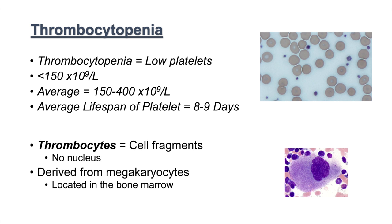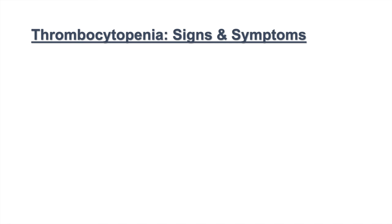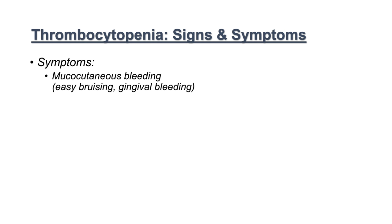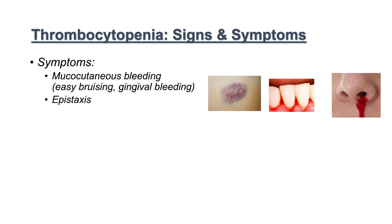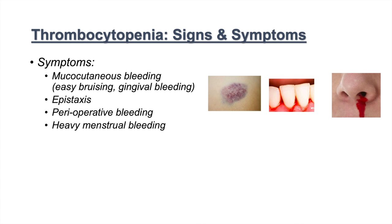Thrombocytes are important in initiating blood clots. If we have low numbers of platelets, we can see particular signs and symptoms. These include mucocutaneous bleeding. Patients with low platelet counts have a proclivity to bruise easily, and they can get gingival bleeding — bleeding of their gums and mouth. They're also at risk for epistaxis or nosebleeds, increased perioperative bleeding, heavier menstrual bleeding, and higher risk for peripartum bleeding.